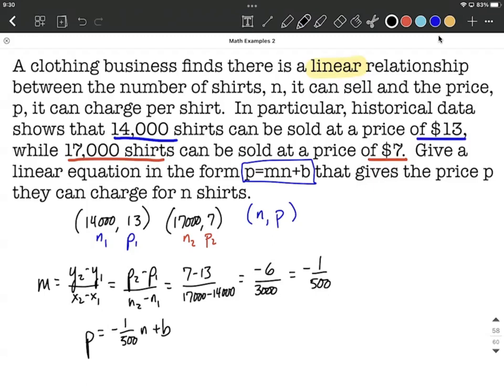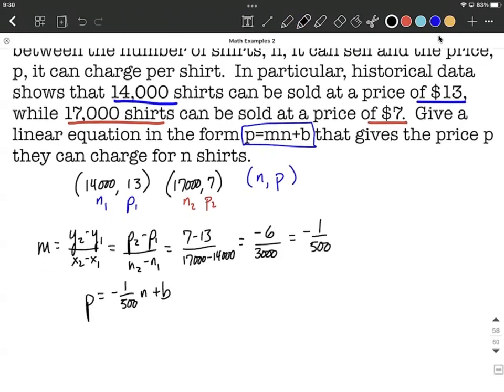To get B, let's use one of our two ordered pairs that we have. I'm going to choose the first one, N1, P1, and I'm going to go ahead and fill in 13 is going to go for our P value, equals negative 1 over 500, 14,000 is going to go in for our N value, plus B.